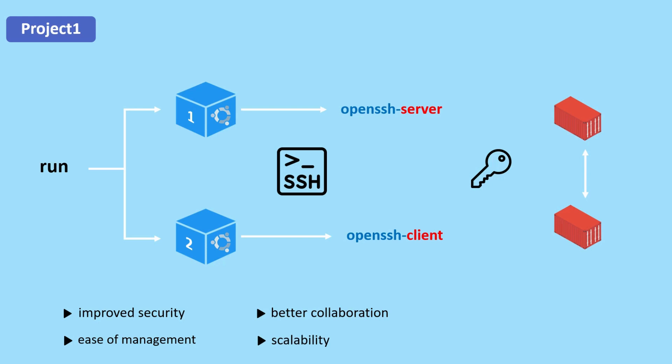Fourth is scalability. Containers are lightweight and can be easily scaled up or down to meet changing application demands. By using Docker you can quickly spin up new containers as needed to handle increased traffic and then shut them down when traffic decreases. This helps to optimize resource utilization and reduce costs. Last but not least is portability. Docker containers are highly portable, meaning you can easily move them between different environments and cloud providers without worrying about dependencies or configuration issues, simplifying deployment and reducing the risk of downtime.